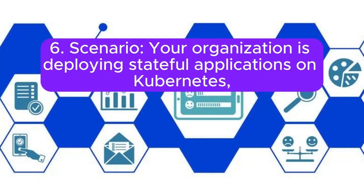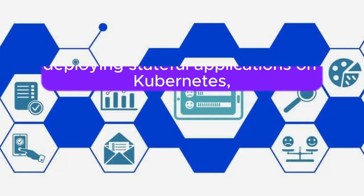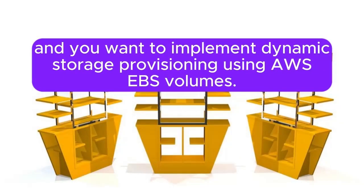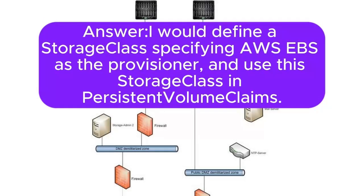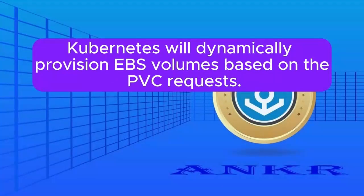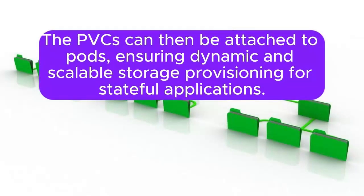Scenario 6: Your organization is deploying stateful applications on Kubernetes, and you want to implement dynamic storage provisioning using AWS EBS volumes. How would you set up storage classes and persistent volume claims (PVCs) to automate the creation of EBS volumes for stateful workloads? Answer: I will define a storage class specifying AWS EBS as the provisioner and use this storage class in persistent volume claims. Kubernetes will dynamically provision EBS volumes based on the PVC requests. The PVCs can then be attached to pods, ensuring dynamic and scalable storage provisioning for stateful applications.